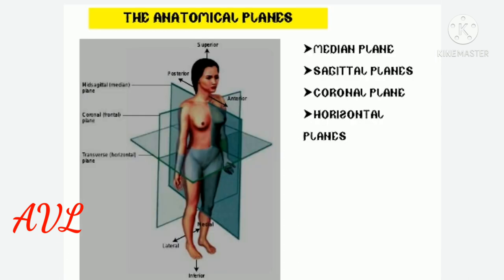Anatomical planes describe the sectional view of a part of the body or an organ. They help in understanding the relationship of one organ with another and the structural orientation of tissues. The different planes are the median plane, sagittal plane, coronal plane, and horizontal plane.